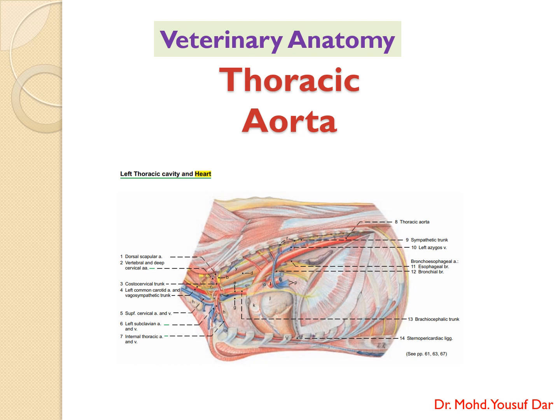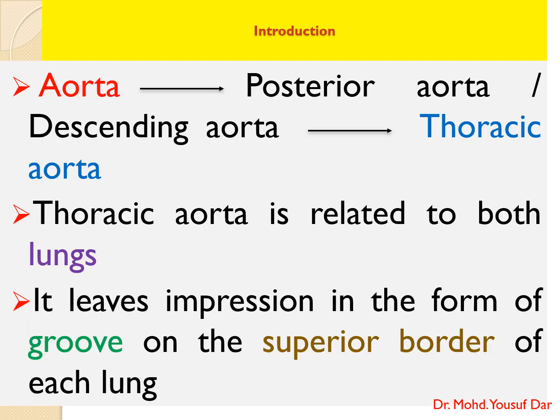Today our topic is the thoracic aorta. The aorta arises from the base of the left ventricle, then it ascends between the pulmonary artery on the left and the right atrium on the right side, forming the ascending aorta.